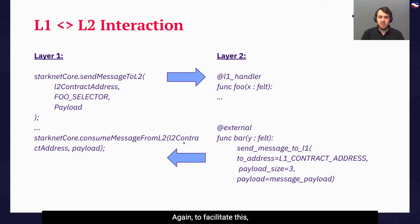Again, to facilitate this, on the other end, a Layer 1 contract has to ping the StarkNet core contract with the consume message from Layer 2 method. In this case, the consume message from Layer 2 receives as input the Layer 2 contract address, as well as a payload, which will contain the transferred payload back from Layer 2.